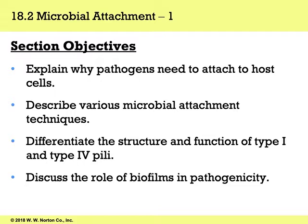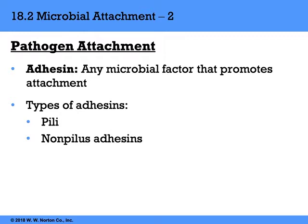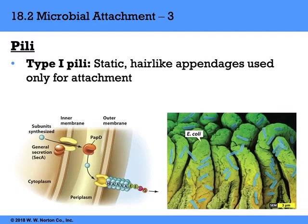We'll talk about why pathogens need to hook up to hosts, describe various microbial attachment techniques, differentiate type 1 and type 4 pili, and talk about biofilms. An example of an attachment mechanism is adhesin, a microbial factor promoting hookup. These include pili and non-pili adhesins. A type 1 pilus is a hair-like appendage used strictly for attachment.